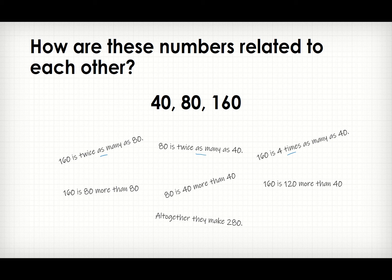You can also say 160 is 80 more than 80, or 80 is 40 more than 40, 160 is 120 more than 40, and so on and so forth. You can also say all together they make 280. Understanding how numbers are related to each other is the key in many of such word problems.